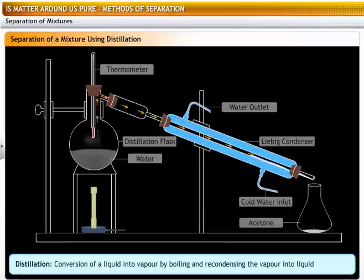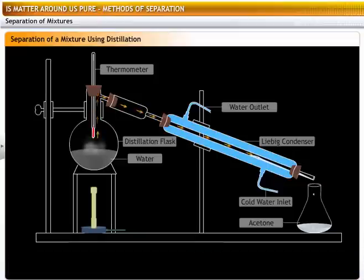This process of conversion of a liquid into vapor by boiling and then recondensing the vapor into liquid is called distillation. This method is used for the separation of a mixture containing two miscible liquids that boil without decomposing and have a large difference between their boiling points.